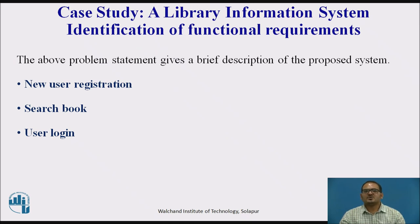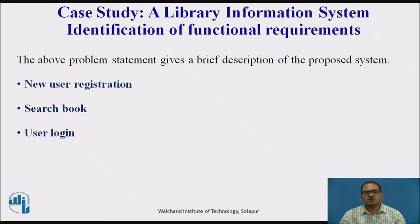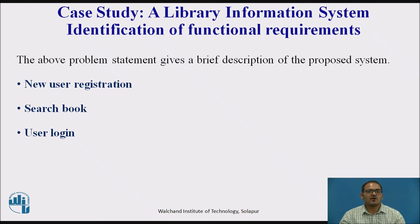From the above problem statement, even without deep analysis, we can identify some basic functionalities: new user registration, search book, and user login. For new user registration, any member of the institute who wishes to avail library facilities must register with the library information system. On successful registration, a user ID and password are provided, which must be used for any future transactions.